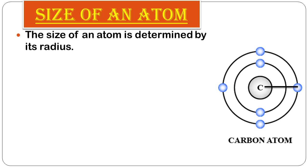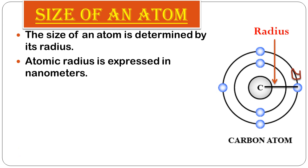The atomic radius of an isolated atom is the distance between the nucleus and its outermost shell. For a carbon atom, this is the distance from the nucleus to the last shell. The atomic radius is expressed in the unit nanometer.